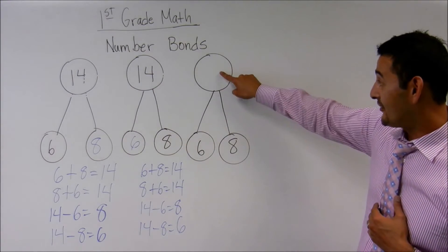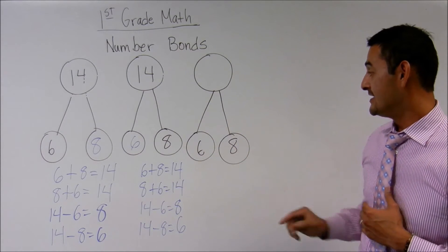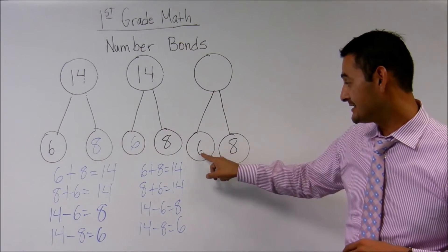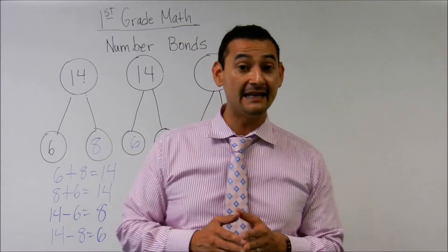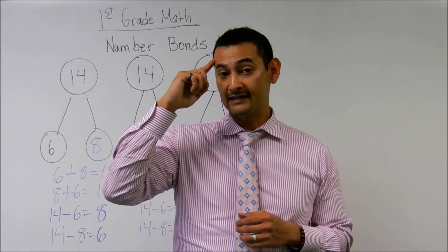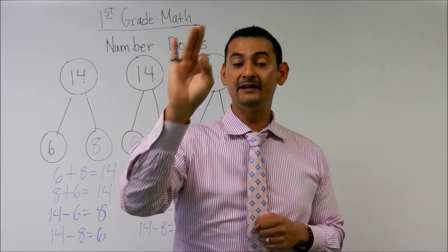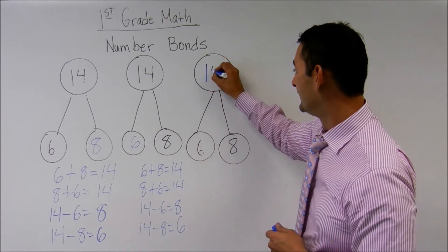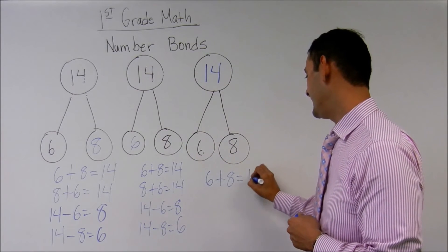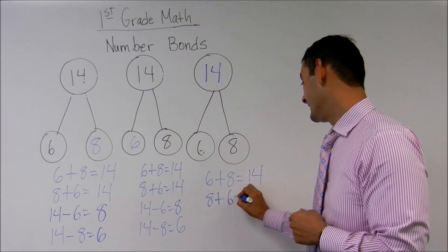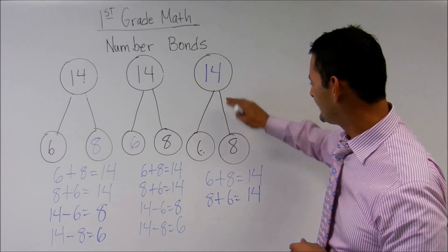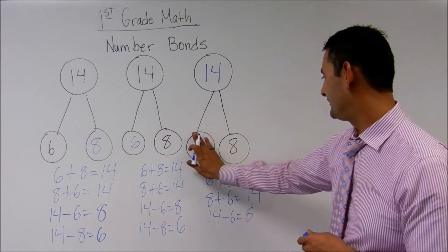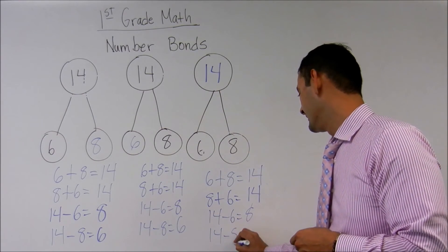Now let's take a look at this last one. Here I don't have the number, but I've got two numbers — 6 and 8. To figure out the missing number I'm going to add. I'll choose the greater number, 8, and count up 6 more: 8, 9, 10, 11, 12, 13, 14. So 6 plus 8 equals 14, or 8 plus 6 equals 14. And subtracting: 14 minus 6 equals 8, or 14 minus 8 equals 6.